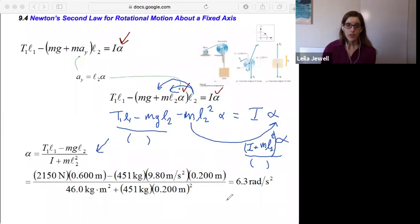And when we fill in all of those numbers, which are all things that we know, we can get the angular acceleration as 6.3 radians per second squared.